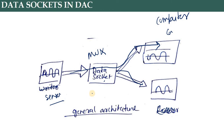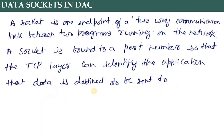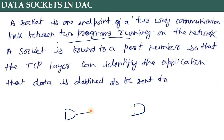A data socket is one endpoint of a two-way communication link between two programs running on the network. One program is for the sensor and one for processing, and through the socket they are connected to each other. A socket is bound to a port number so that we have the IP address and the transfer protocol layers connected with the computers.